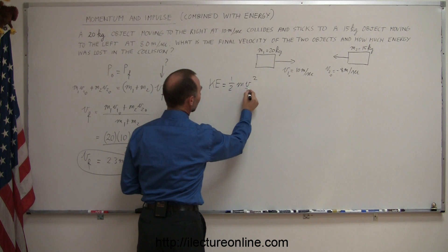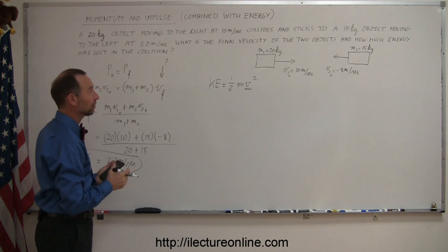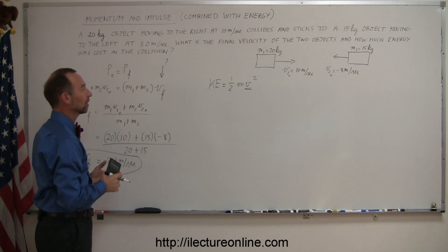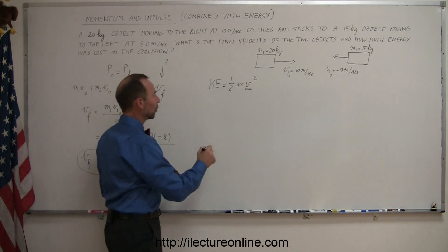And since the velocity is squared, that means it doesn't matter if it's positive or negative velocity, it's squared, the kinetic energy cannot have a direction, it's a scalar quantity.